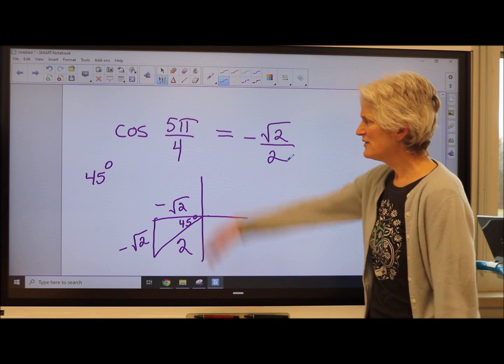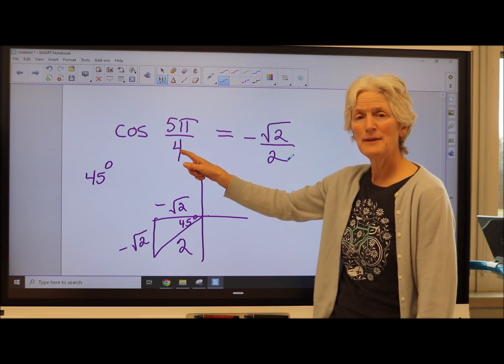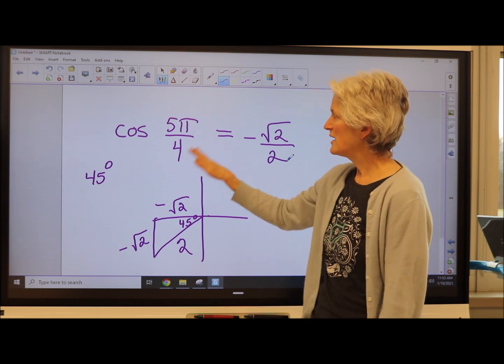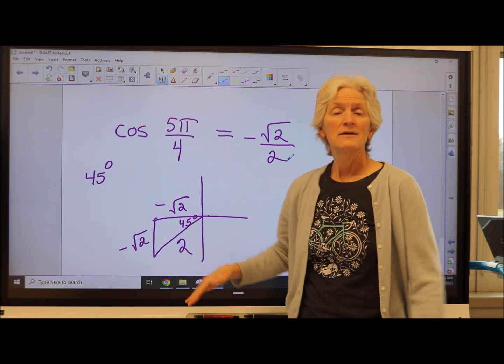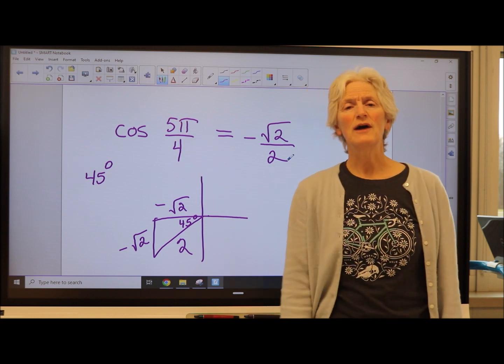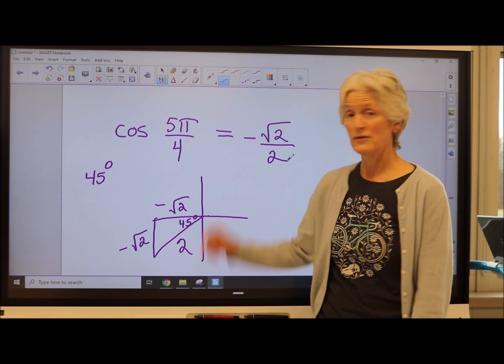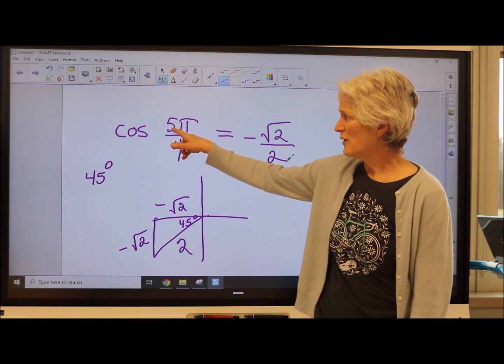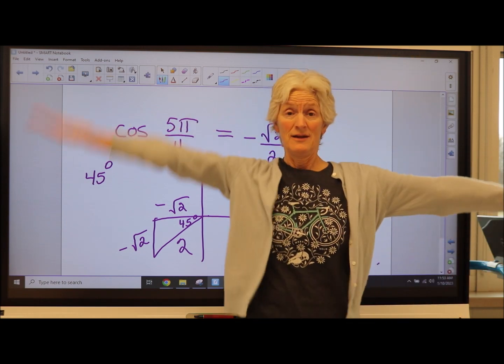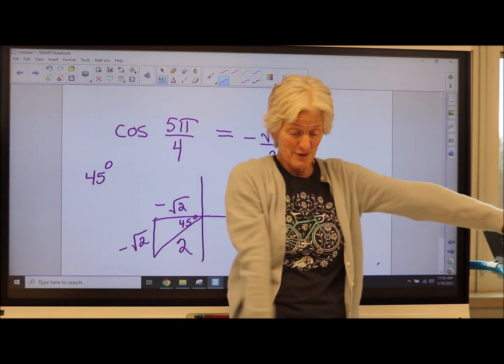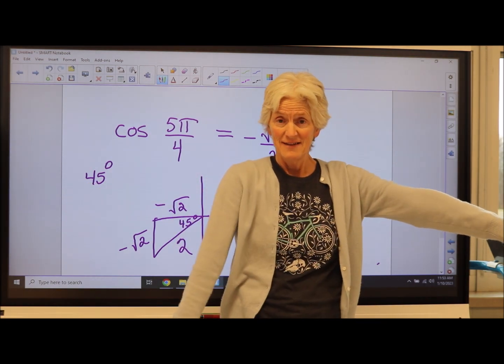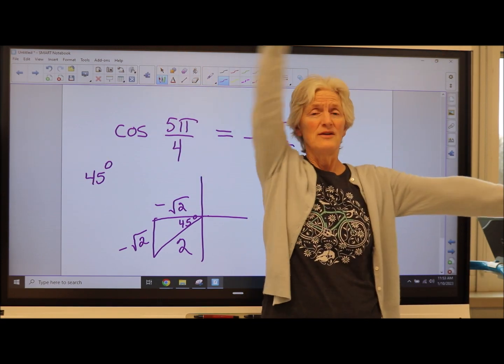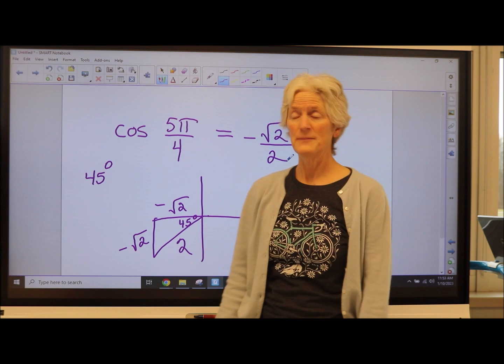So with radians, focus on the denominator. That tells you how big your reference angle is. Then look at your whole ratio. Use that to help you figure out what quadrant you're in. Okay? A little trick, of course, if your numerator is bigger than your denominator, you know you're either in the third or the fourth quadrant. If your numerator is smaller, oh, that means you're less than 1 pi. You're either in the first or the second quadrant.